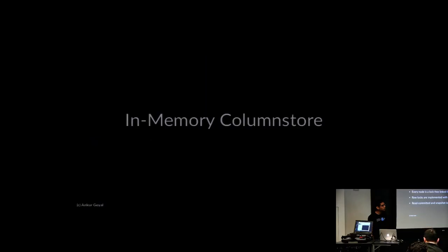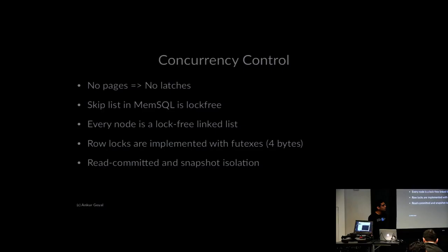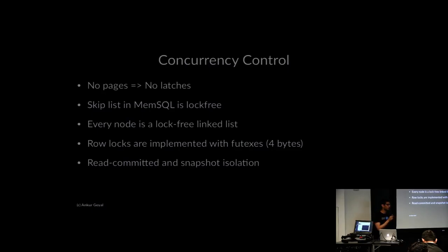Does every table have to have at least one primary key index? Yes — every table has a primary key, and if you don't specify one as a user, we'll create a fake one under the hood for you, in the row store but not in the column store. Every operation should go through the index. But sequential scans are supported — you can sequentially scan a primary key. If you don't specify a primary key, rows have an implicit primary key whose value is the order of insertion. We essentially map that case to having an index.